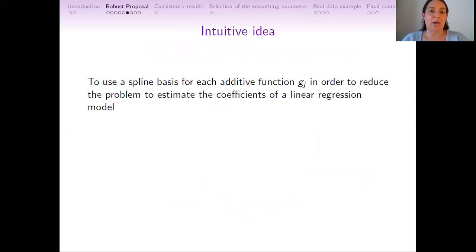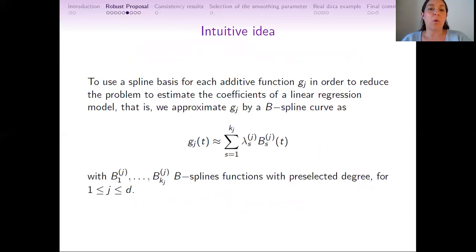So the intuitive idea consists of considering a spline basis for each additive function g_j in order to reduce the problem to estimate only the coefficients of a linear regression model. So we are going to approximate g_j by a B-spline curve, where B_s are the known B-spline functions, λ_s are the unknown coefficients, and k_j is the number of terms in the basis.